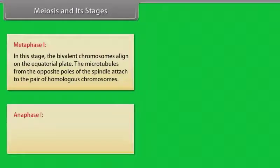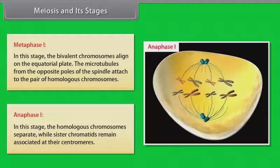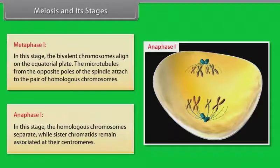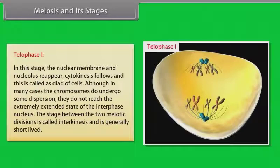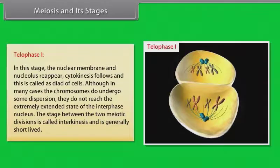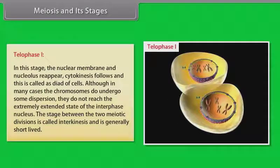Anaphase 1 is the next stage. In this stage, the homologous chromosomes separate while sister chromatids remain associated at their centromeres. Anaphase 1 is followed by telophase 1. In this stage, the nuclear membrane and nucleolus reappear. Cytokinesis follows and this is called as dyad of cells. Although in many cases the chromosomes do undergo some dispersion, they do not reach the extremely extended state of the interphase nucleus. The stage between the two meiotic divisions is called interkinesis and is generally short-lived. Interkinesis is followed by prophase 2.